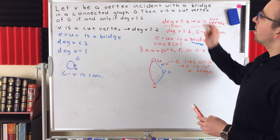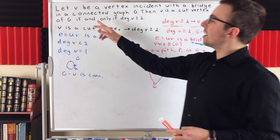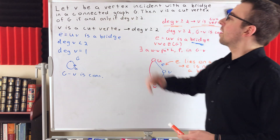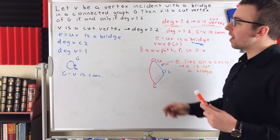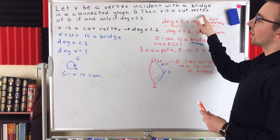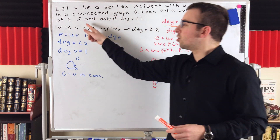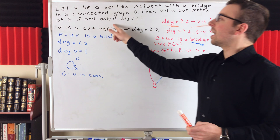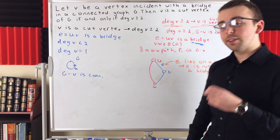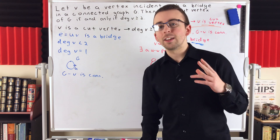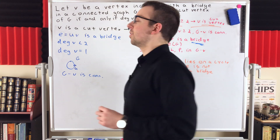To summarize the theorem: if V is a vertex incident with a bridge in a connected graph G, then V is a cut vertex of G if and only if the degree of V is greater than or equal to 2.